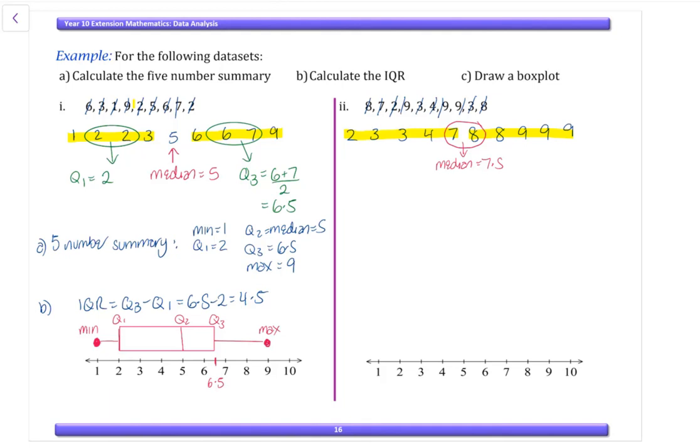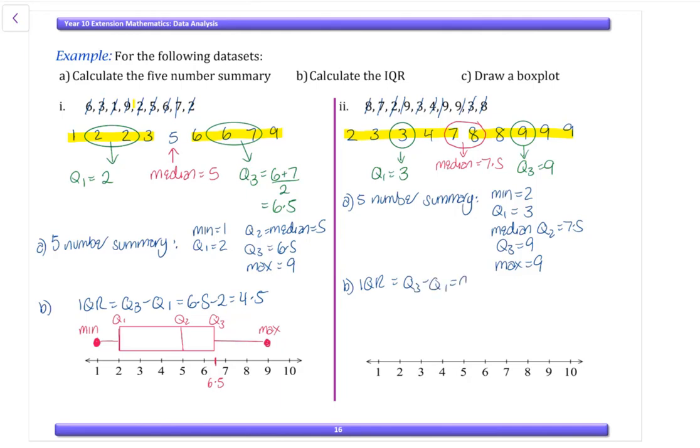We then look at each side of our data, and we actually have a specific point. So our Q1, or our lower quartile, is 3. And our Q3 is 9. So our five number summary: min is 2, Q1 is 3, median which is Q2 is 7.5, Q3 is 9, and our max is 9. Our IQR is Q3 minus Q1, so it's going to be 9 minus 3, which is 6.